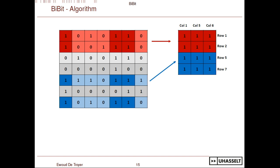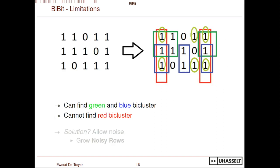As mentioned, it's not finding all bi-clusters. For example, in a small dataset it will find the green and blue bi-clusters, but the red bi-cluster will not be found. Because if you compare rows one and two, one and three, and two and three, they will always have something more in common than just the first and last column. So the red bi-cluster will never come out of this algorithm.